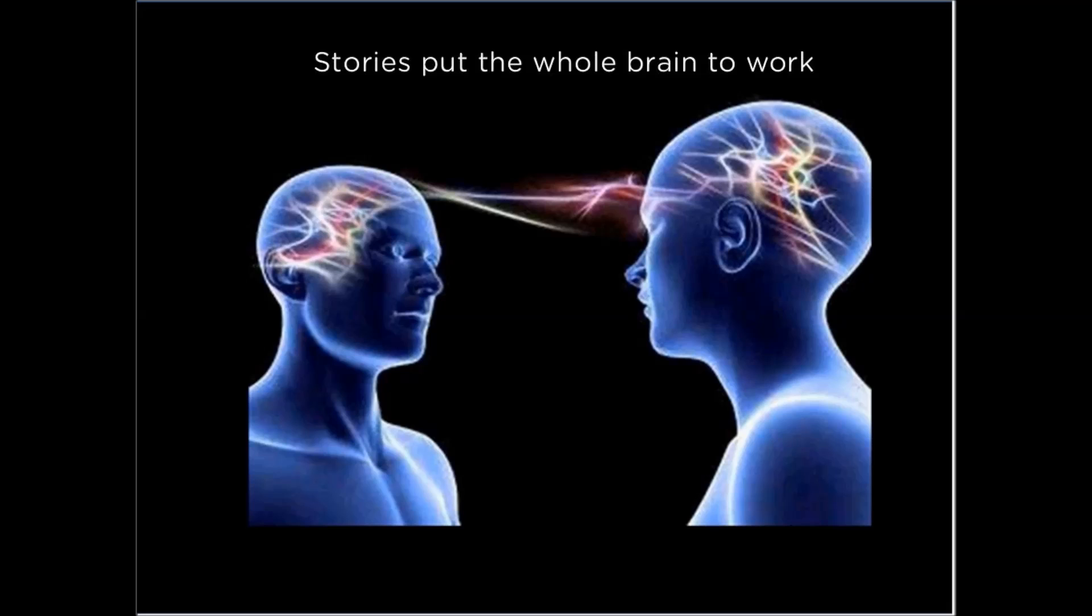Not only does my whole brain engage when I tell a story, but the fMRIs reveal that the very same areas are activated in your brain. This extraordinary discovery is called entrainment or brain coupling, and it is the ultimate synchronicity. When entrainment happens, our brains, which are designed to look for patterns, look to relate that story to our own experience.